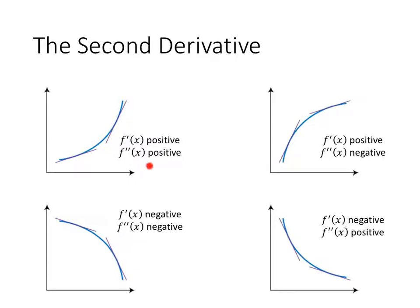Here we see several possibilities for what a function might look like based on its first and second derivatives. In the first example, if my first derivative is positive, that means my function is increasing — it's going up as I go from left to right. If the second derivative is also positive, then the slope is also increasing. So the slope here is less than the slope further right, because the slope is going up. Not only is the function increasing, but the slope is increasing.